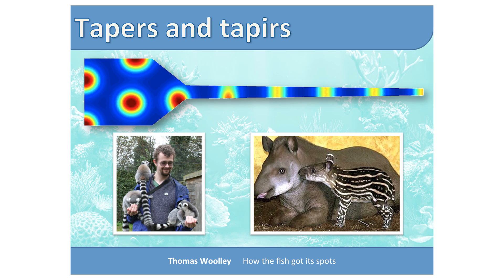Unfortunately, we have ring-tailed lemurs. They don't have any spots on their body — they're all one color — but stripes on the tail. That's not allowed. Tapirs are even worse. When they're born, they have stripes and spots on their body going to spots on their legs. What's even more insulting is that when they grow older, they completely lose all their patterns. That's insult to injury. It's just not fair.